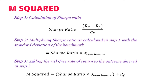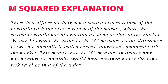M-Squared can be computed in multiple steps. In the first step, we calculate the Sharpe Ratio as discussed earlier. After that, we multiply the Sharpe Ratio with the standard deviation of the benchmark, and then add the risk-free rate of return to this product. There is a difference between the scaled excess return of the portfolio and the excess return of the market, where the scaled portfolio has the same volatility as that of the market. We can interpret the value of M-Squared as the difference between the portfolio's scaled excess returns compared with the market. This means M-Squared indicates how much return a portfolio would have attained had it the same risk level as the index.